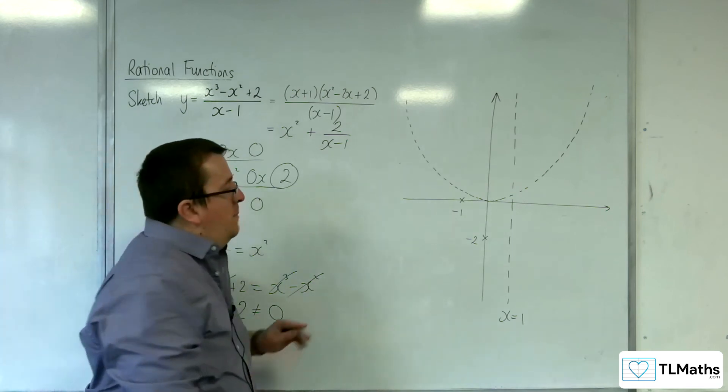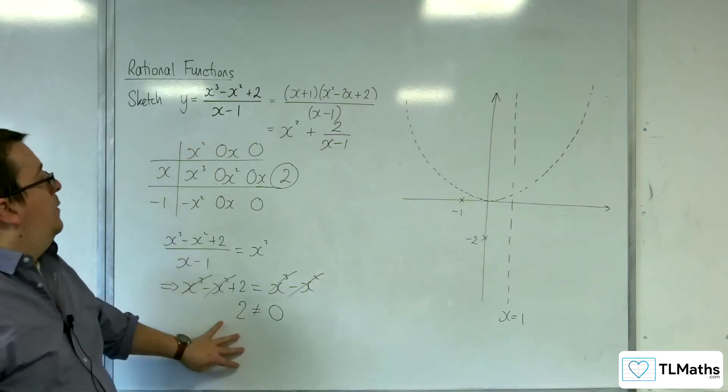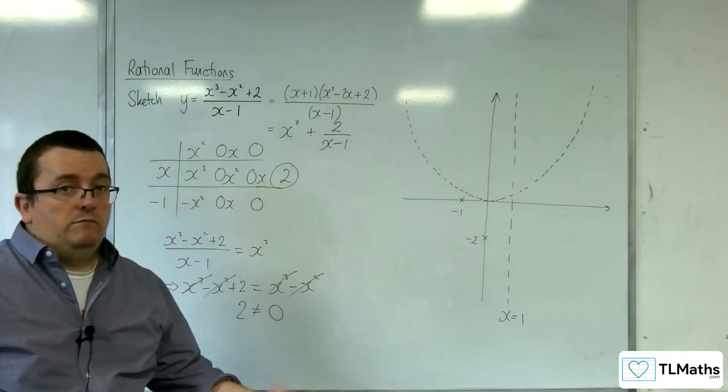And so my curve does not cross the asymptote. So, you can either do it that way, as I've shown, or that way.